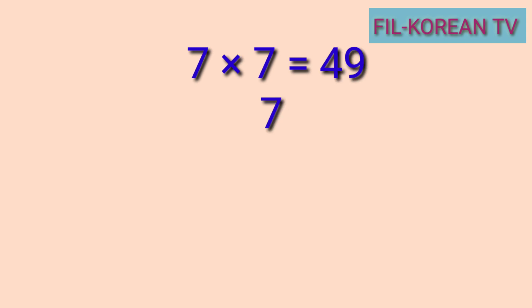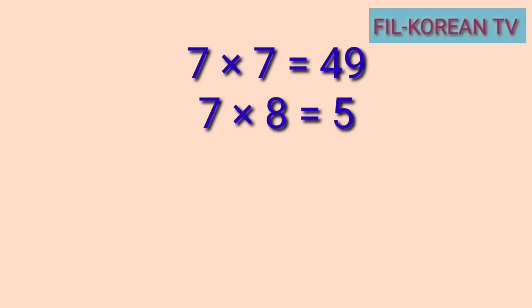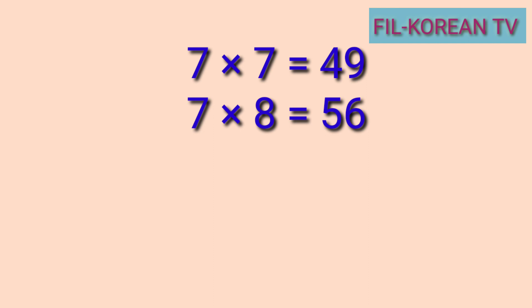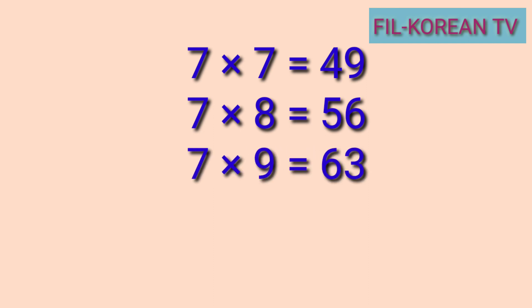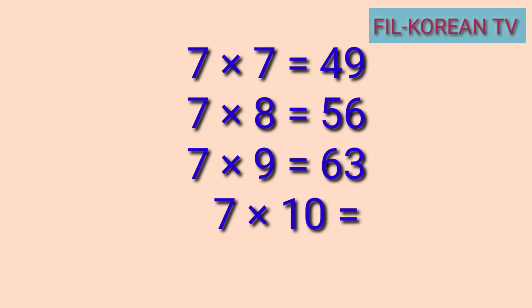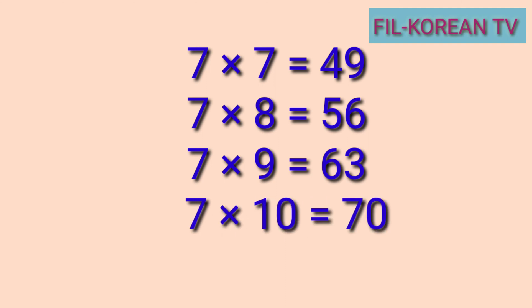Table 7. 7 x 7 equals 49. 7 x 8 equals 56. 7 x 9 equals 63. 7 x 10 equals 70.